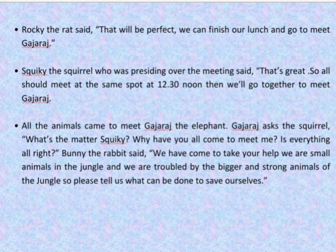Gajiraj asked Rocky the rat to call the king of the jungle. After some time, the king of the jungle arrives. Gajiraj tells Lucifer the lion, your majesty, I should remind you that when you were caught in the hunter's net some days before, Rocky the rat, Pokey the porcupine, Bunny the rabbit had helped you come out of the net and they saved your life. Today, they have come with a complaint that all the bigger and stronger animals trouble them. So I request you to please tell them to respect each and every creature of this jungle as everyone's existence in this jungle is important.